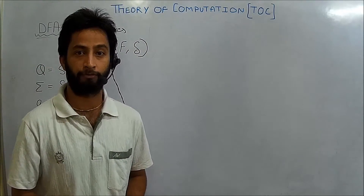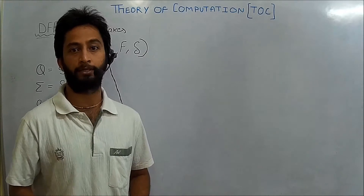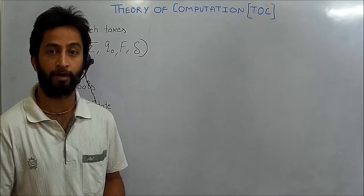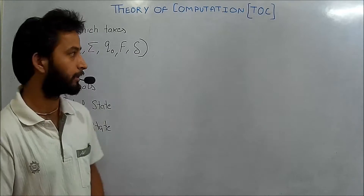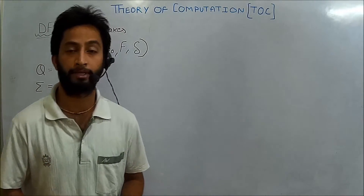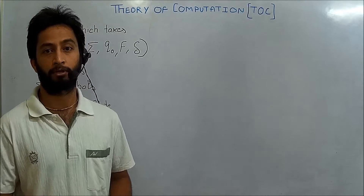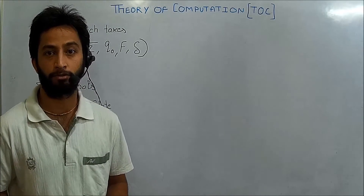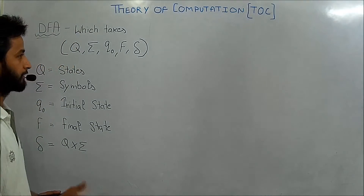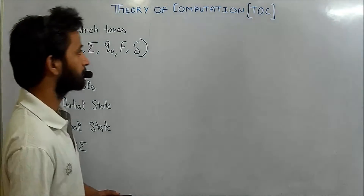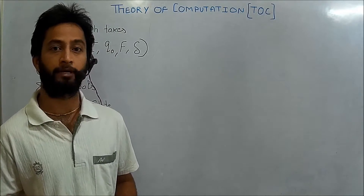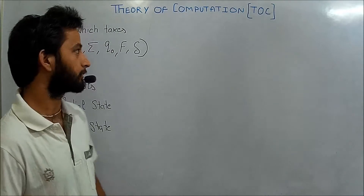In the previous lecture, we completed a topic in which we have two types of language: one is finite and the second is infinite. For infinite language, we completed a topic in which we can convert that infinite language to finite representation. With the help of this finite representation, we can say whether a string in that language is acceptable or not.